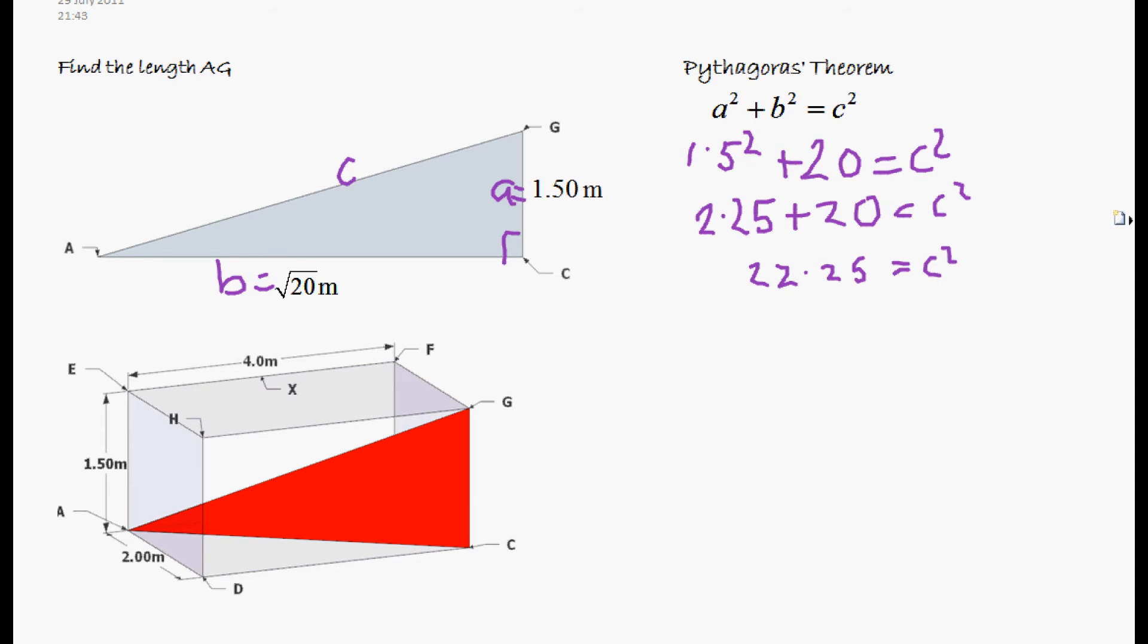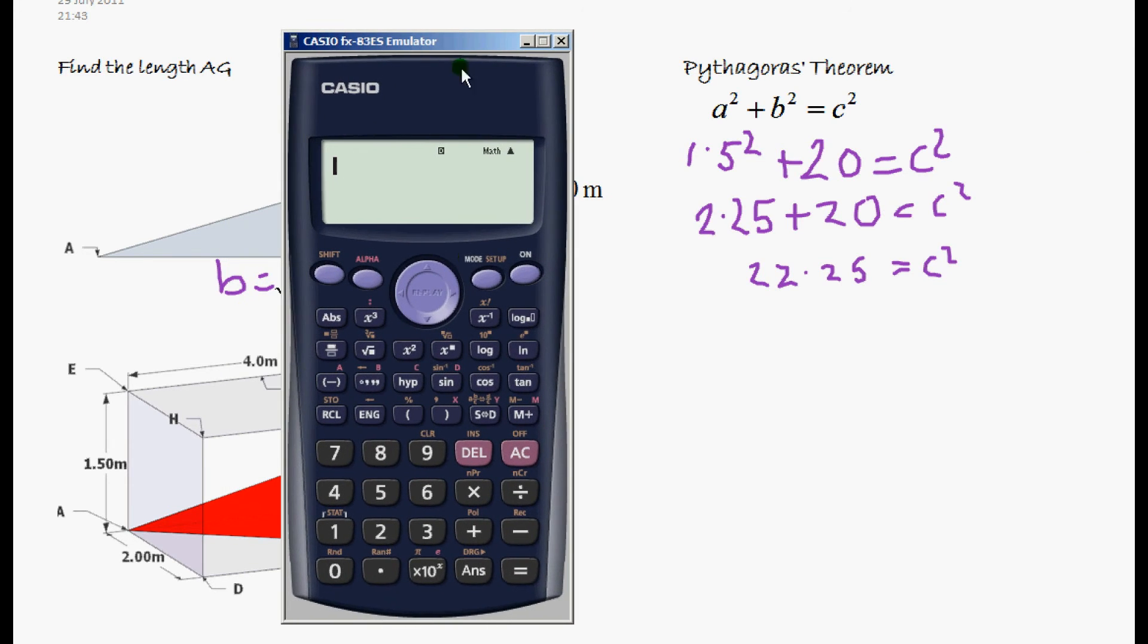So let's grab our calculator and see what C is. So 22.25. Sorry, I've got to put the square root in first. It would help. 22.25 equals. We don't like the third form. We're going to put the decimal one for this question. And we get 4.7169.